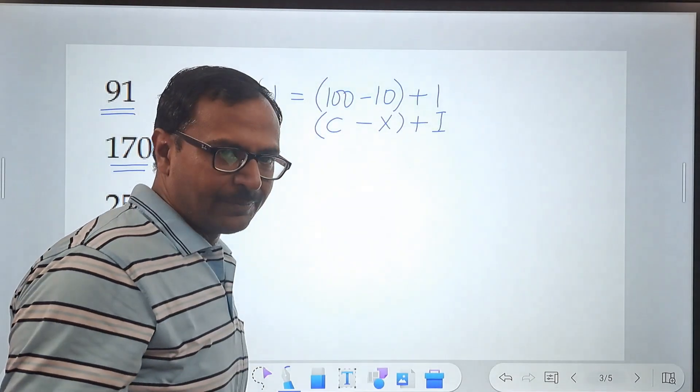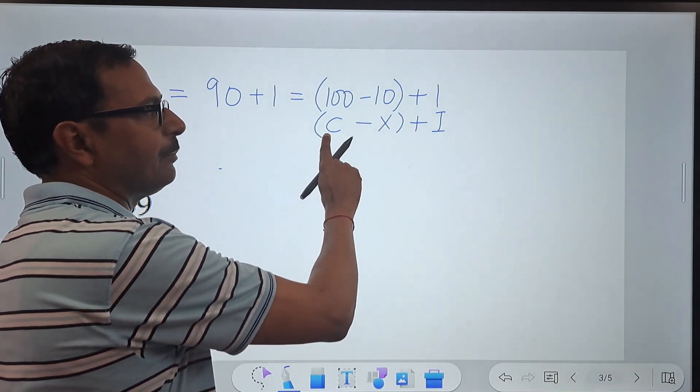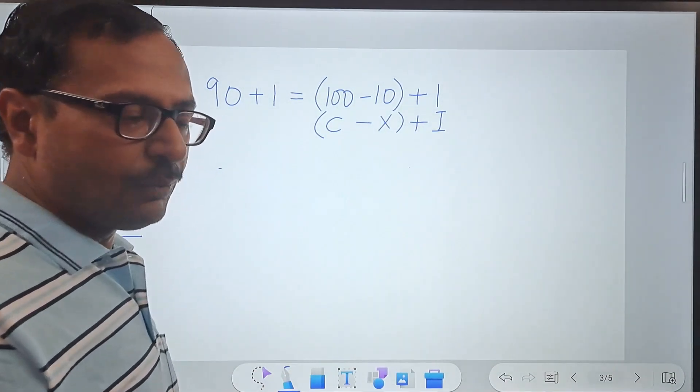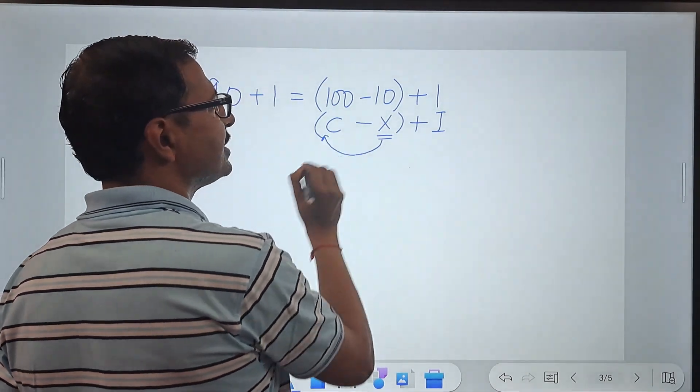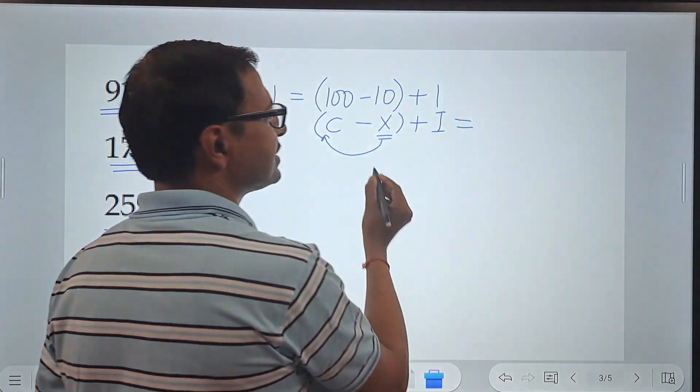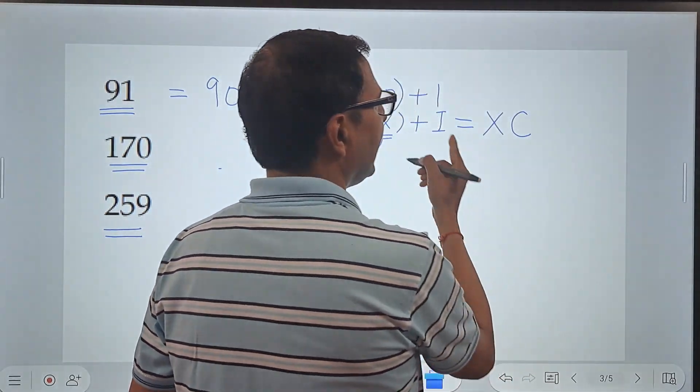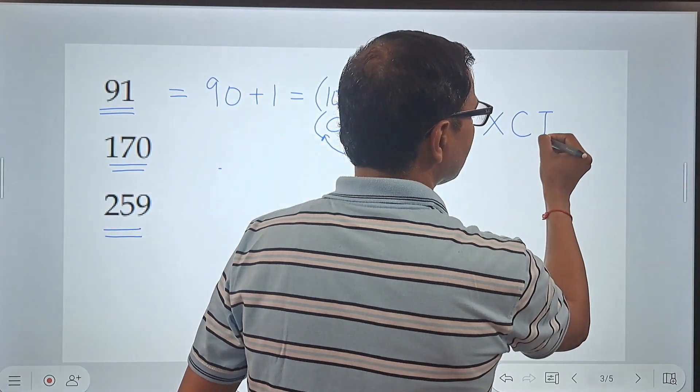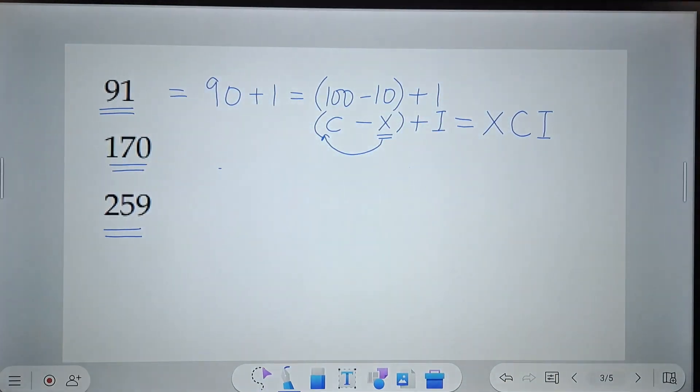I is 1. Whenever you subtract something from a bigger number in Roman numeral, what do you do? You always write that in front of this. C minus X becomes XC and then it is suffixed by this 1 or I. XCI is the Roman equivalent of 91.